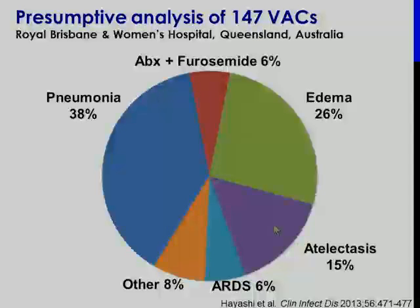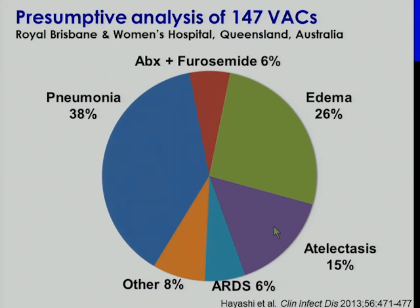We know a little bit about what causes VACs. It tends to be caused primarily by one of four conditions: pneumonia, ARDS, pulmonary edema, and atelectasis. These findings from Australia have been replicated in Europe and the United States as well. These are all nosocomial complications — things we're well experienced with and know something about how to prevent. So it seems to be a target we can attack.